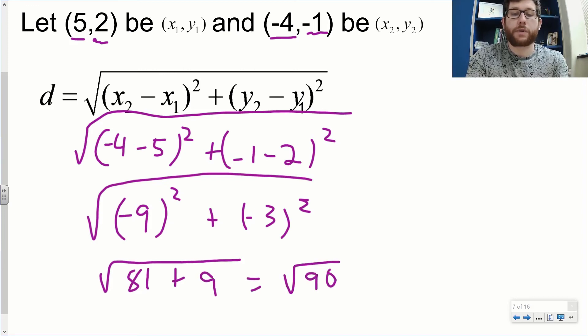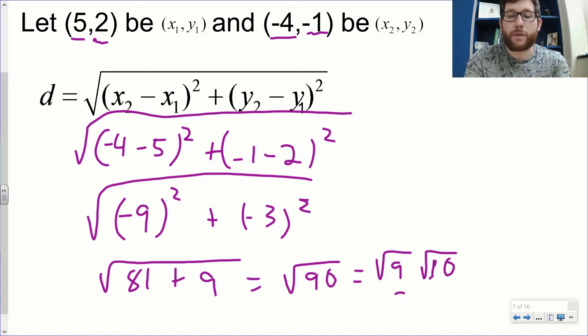Part of this we need to simplify. I can definitely divide out a 9. When we simplify radicals, we find a perfect square and divide that out. I can re-express this as √9 times √10. The √9 is 3, so my final answer is 3√10.